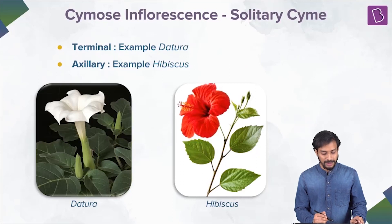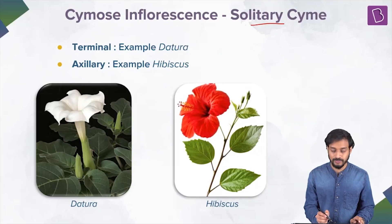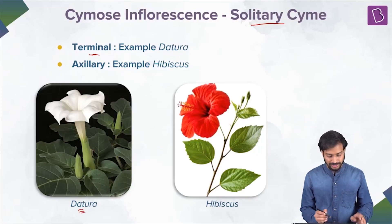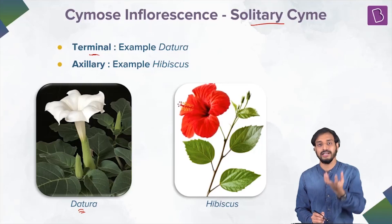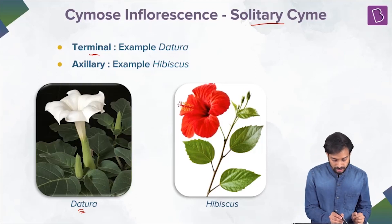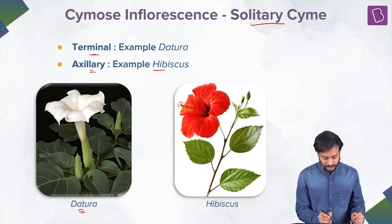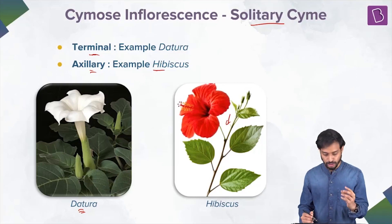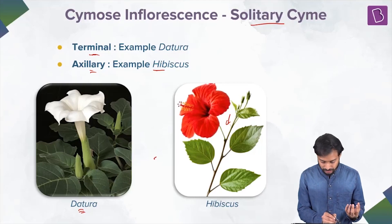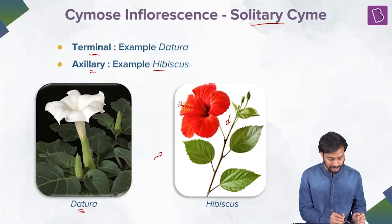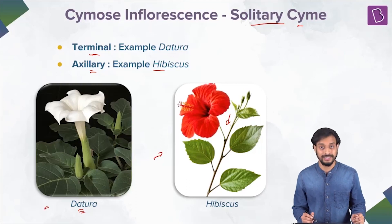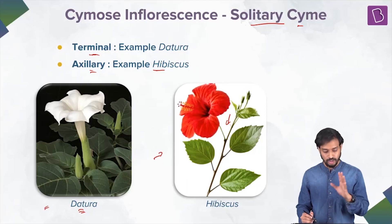One type of cymose inflorescence is the solitary cyme. It can be terminal, as in Datura, where a terminal flower is formed, or axillary, as in Hibiscus, where a single flower is produced in the axil.